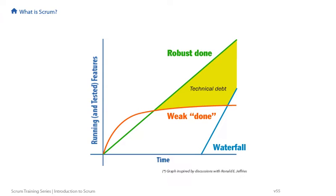Each sprint, we learn more about customer needs and change course a little or a lot. Product development is ongoing with frequent releases rather than a one-shot project.